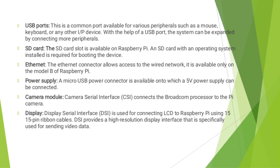A micro USB power connector is available, to which a 5-volt power supply can be connected. The camera module uses the Camera Serial Interface (CSI) to connect the Broadcom processor to the Pi camera.